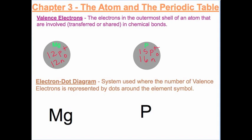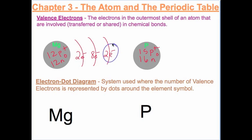Magnesium has 12 electrons: two electrons in the first shell, eight electrons in the second shell, and two electrons in the third shell. Therefore, it has two valence electrons.